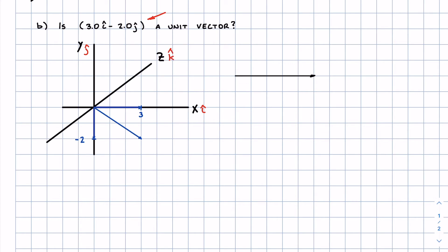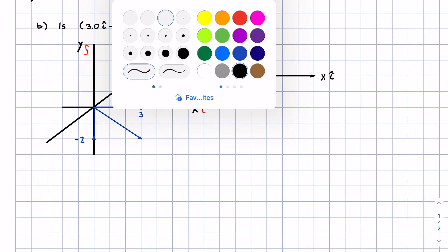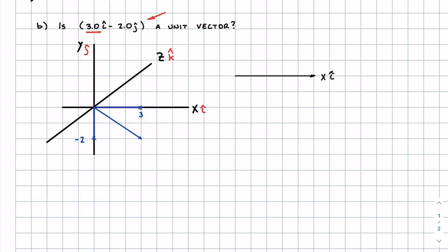But anyway, so here in the x direction or the i hat direction, we have a magnitude in that direction of 3. So this has a magnitude of 3, just this horizontal x part.